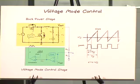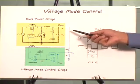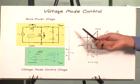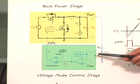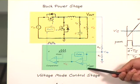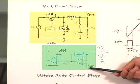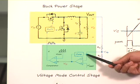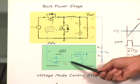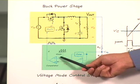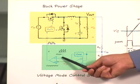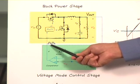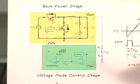Here is a simplified circuit diagram of a voltage mode control converter. The feedback loop senses the output voltage and compares it with the internal reference voltage. The difference, which we call the error signal, goes through the compensation network. The output of the error amplifier is compared with the slope compensation signal to generate the duty cycle. That's how the converter works — it's very simple and straightforward.